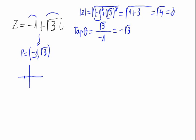Let's represent the point on the plane. This point would be over here at (-1, √3). As we can see, the angle of the vector to this point is theta. What we have to do is ignore the sign of the vector, so the sign goes away, and we work with the reference angle alpha, where the tangent of alpha equals plus the square root of 3.